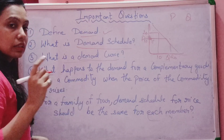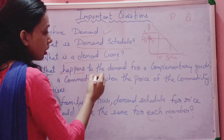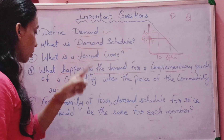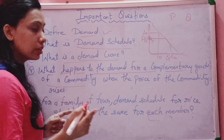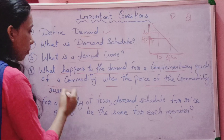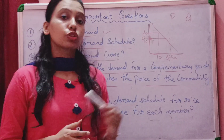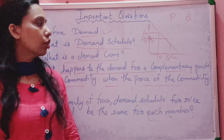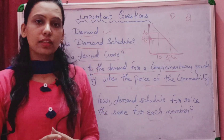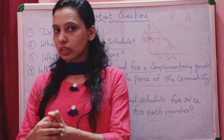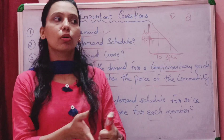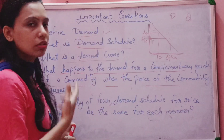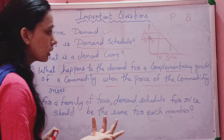Next question: what happens to the demand for complementary goods when the price of a commodity rises? Taking the example of a car and petrol — when the price of petrol increases, the demand for cars will decrease. So we can see a decrease in demand in this case.